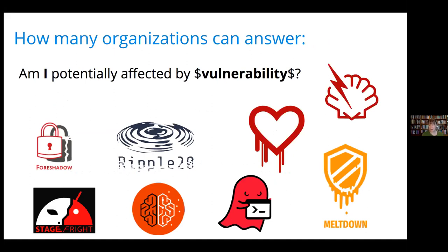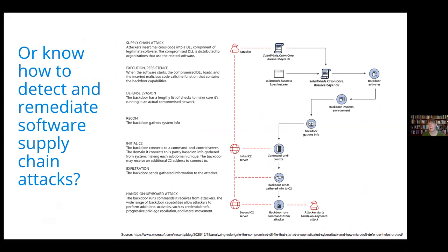The challenge right now is an open question: how many organizations can actually answer whether they are affected by vulnerabilities? We've been hearing a lot about this in the news. Having an accurate software bill of materials for the software on your systems lets you answer that much quicker than a lot of manual digging and assessing. But the automation generally isn't here, so we're seeing large costs to remediate. Getting this automation in place makes it easier to detect that you might be affected, and helps with knowing whether you might be vulnerable to certain types of supply chain attacks.